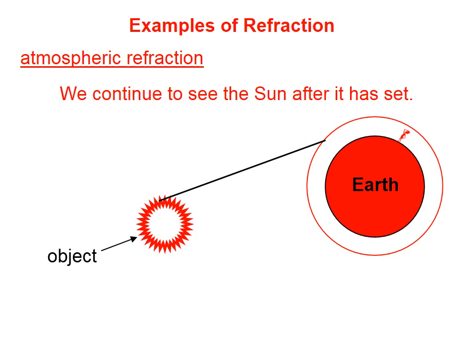But in any case, we know that whenever light is traveling in a faster medium into one in which it travels more slowly, namely the atmosphere, it's going to bend toward the normal.